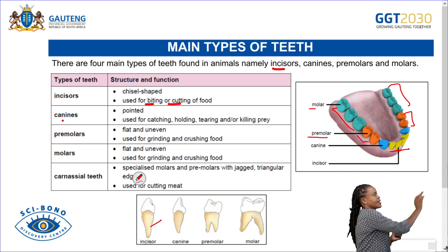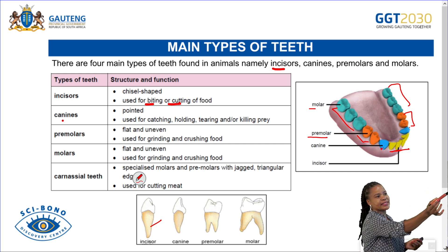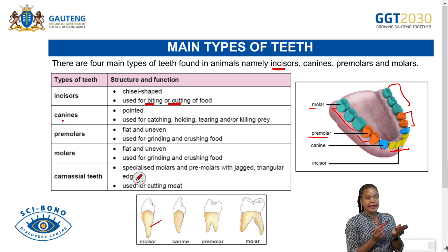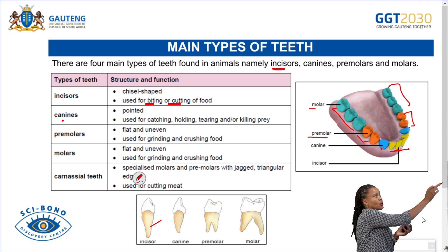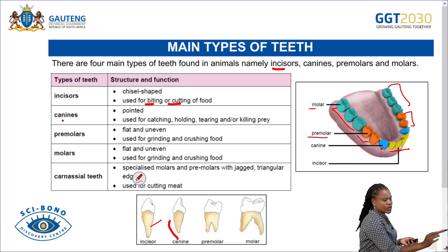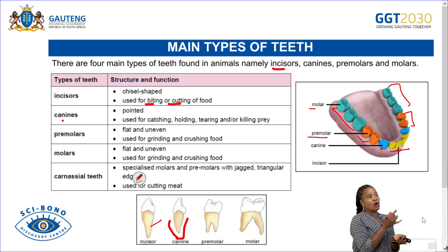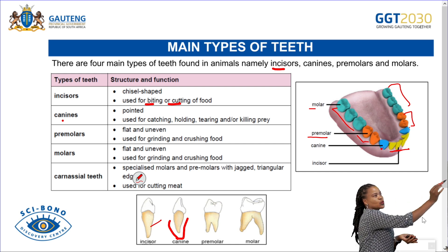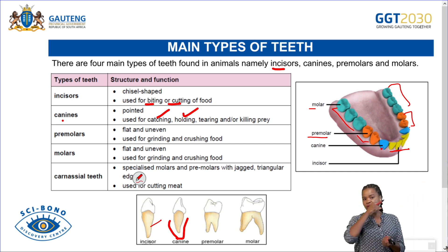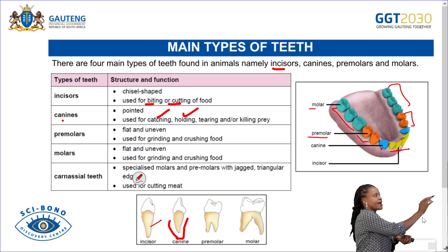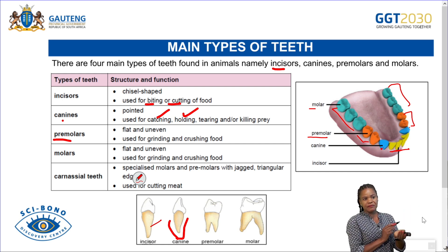The second type are the canines. The canines are a little bit pointed compared to the incisors. Their functions are to catch, to hold, to tear, or to kill prey.